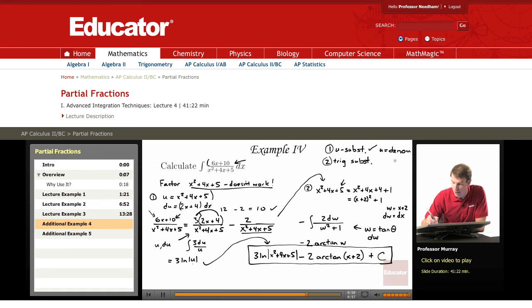u equals the denominator there. So we did the u substitution, and then we do a trig substitution. And a secret tip here is that when you do a trig substitution on one of these, it's always going to be a tangent substitution.